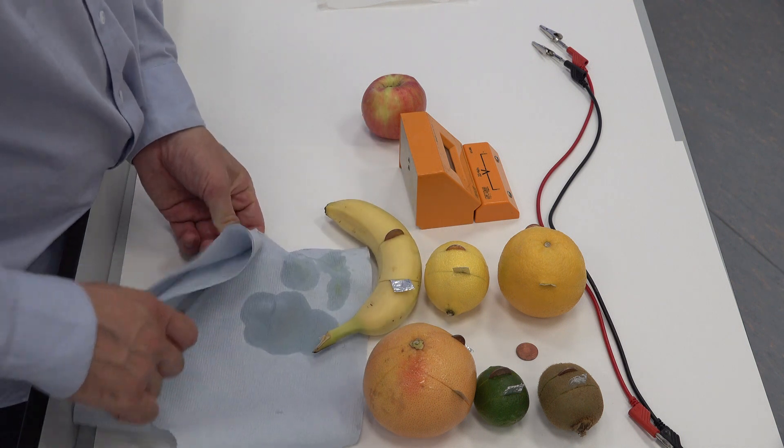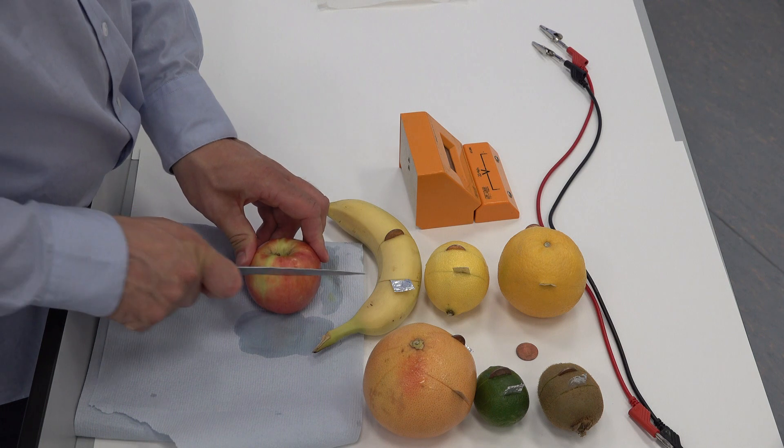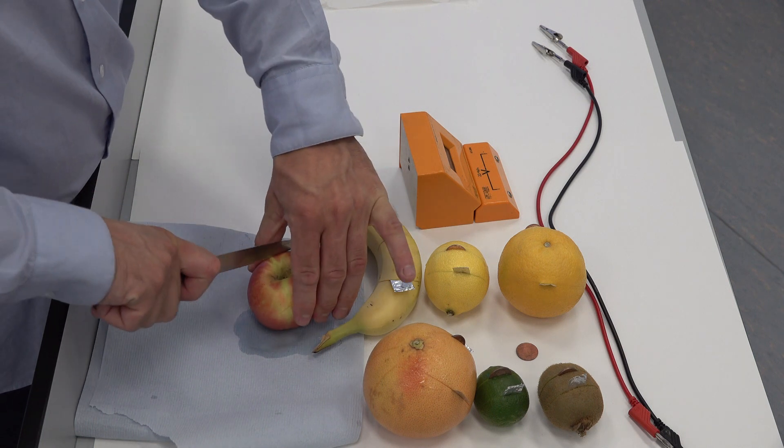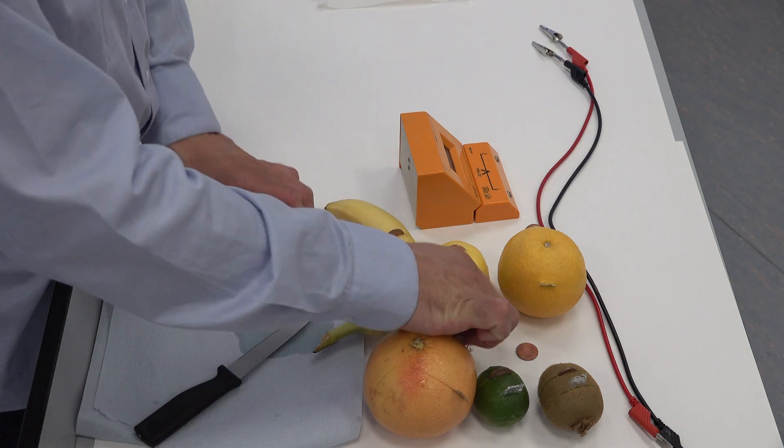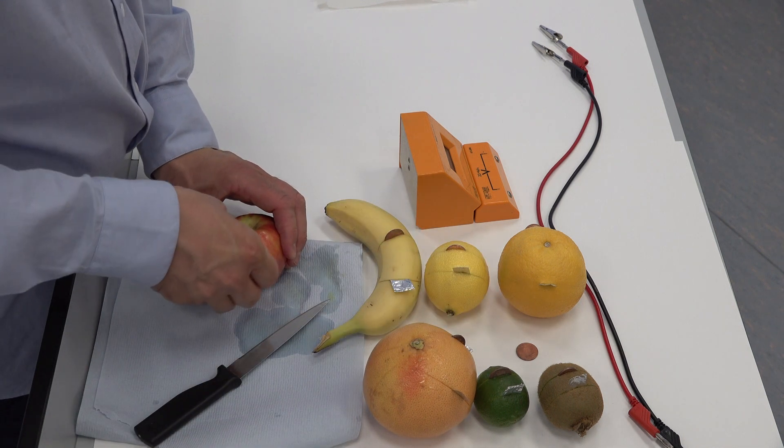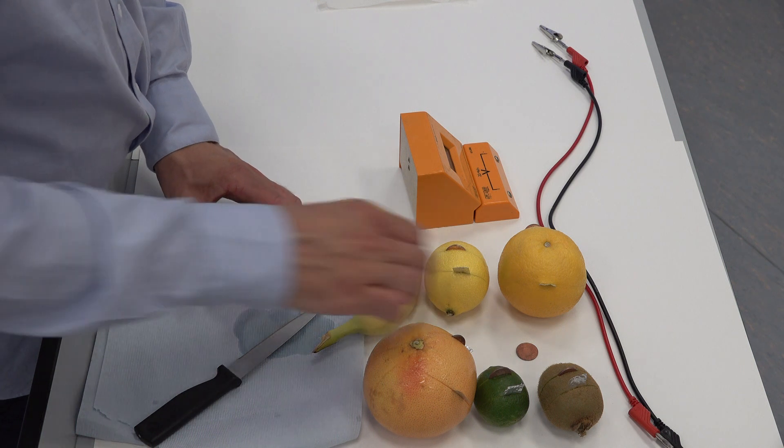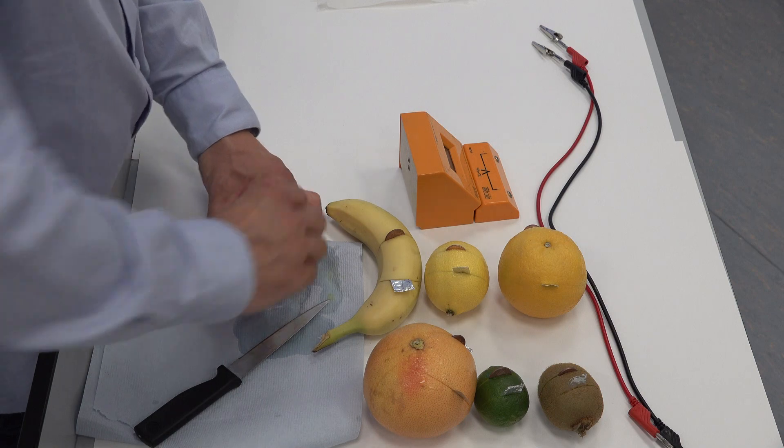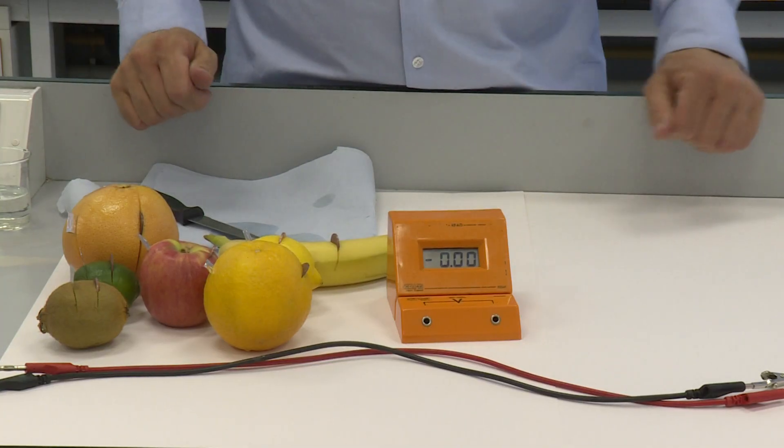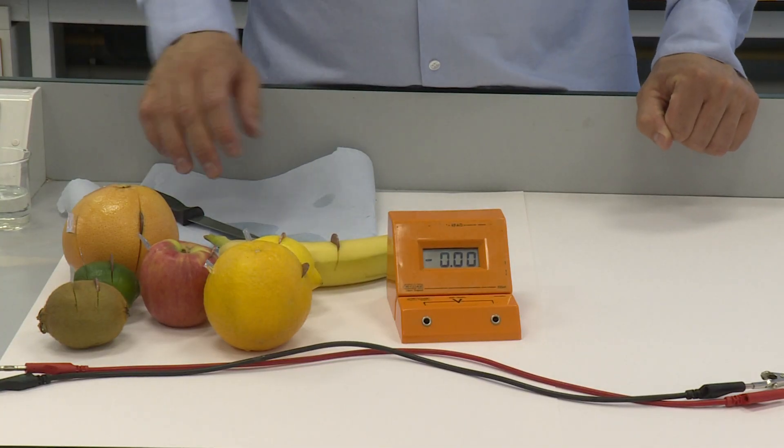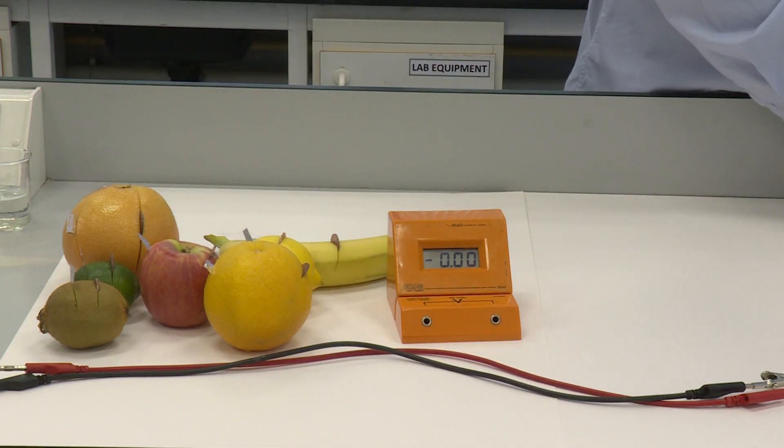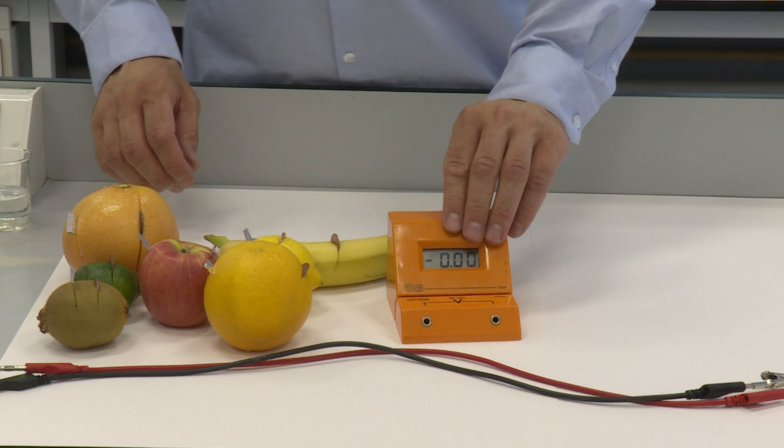Last one, we'll do an apple. Now actually you could compare different types of apples too if you wanted. There we go. So what we have here are seven fruits ready to be tried out. We'll get this out of the way, make sure that's cleaned and carefully taken care of. Back to the fruit.